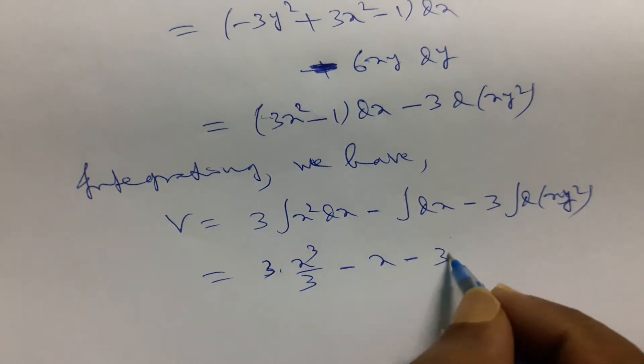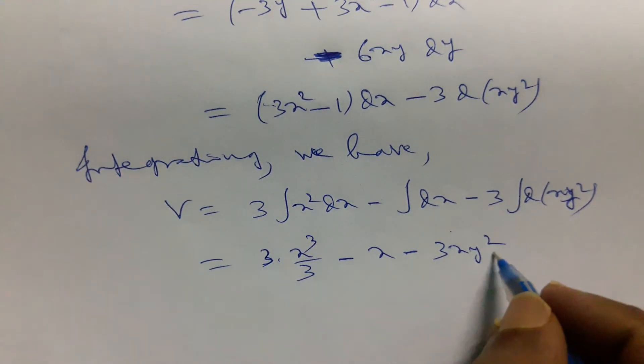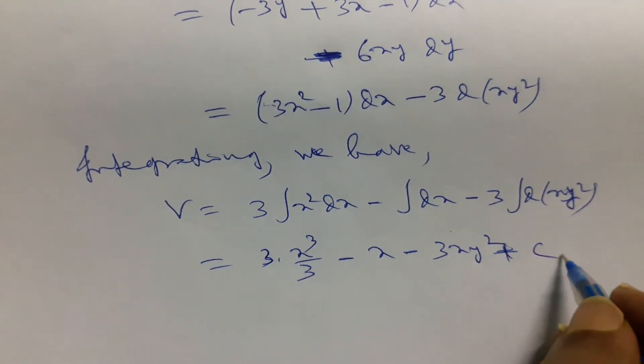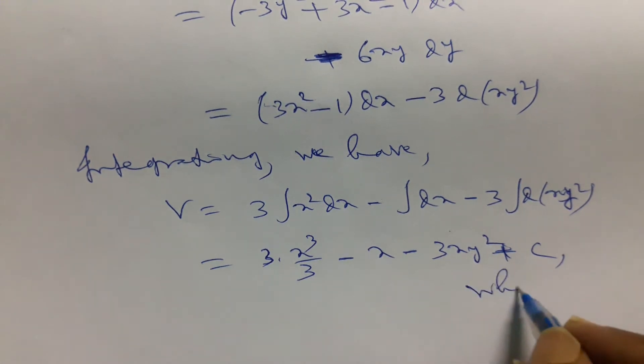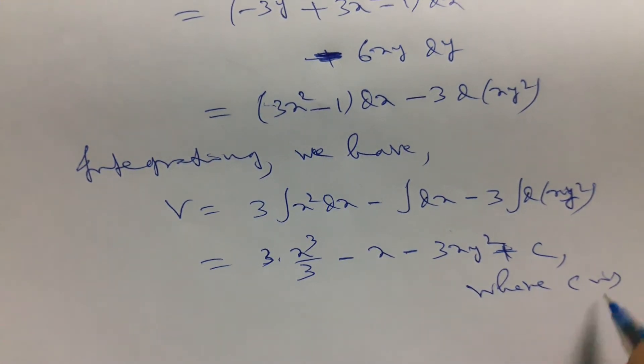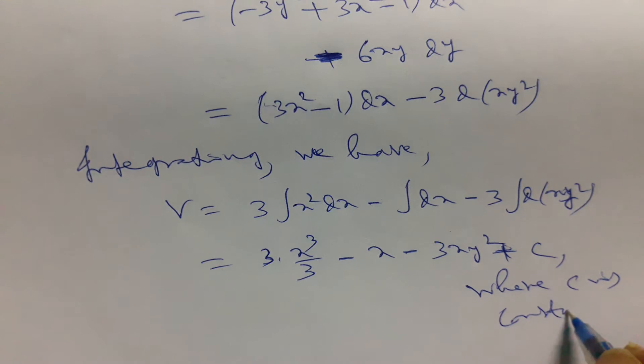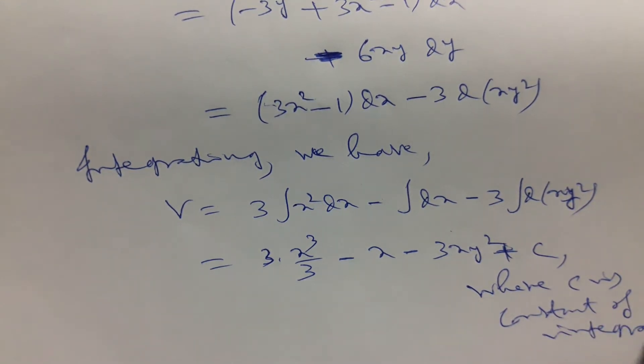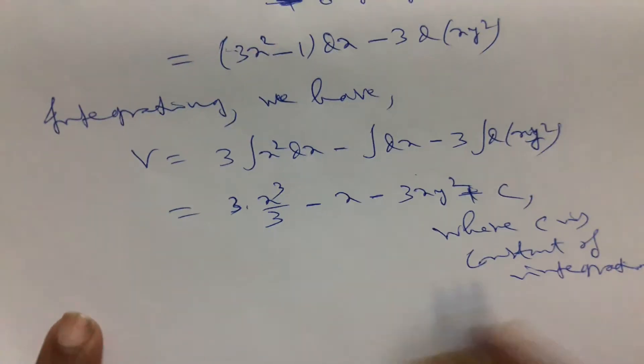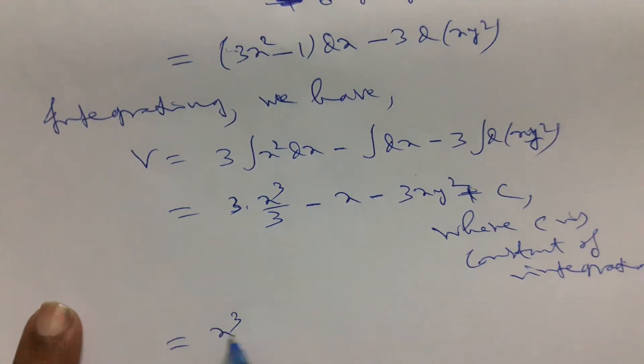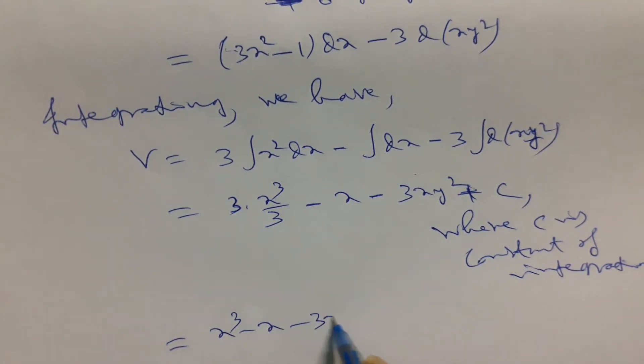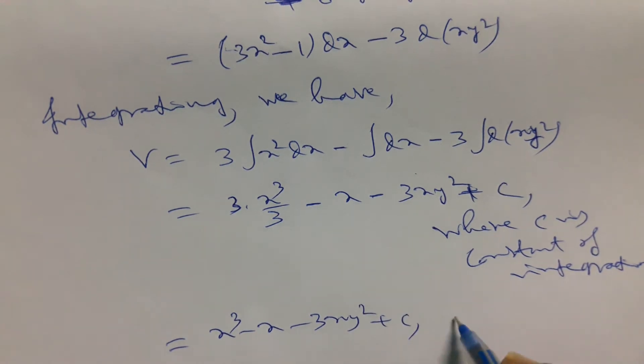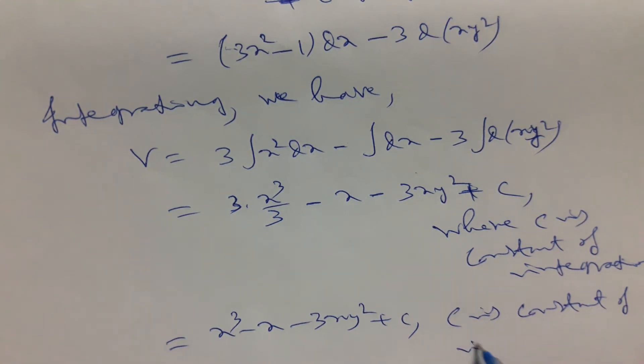x cube minus x minus 3xy square plus some constant where c is constant of integration. So here we find x cube minus x minus 3xy square plus c.